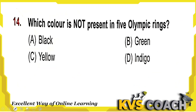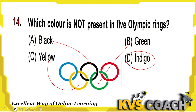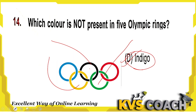Next: which color is not present in the five Olympic rings? Looking at the five Olympic rings, you can see that black is there, green is there, and yellow is also there. But indigo — we cannot see indigo in this picture. So indigo is not present in the five Olympic rings. Option D is the right answer.